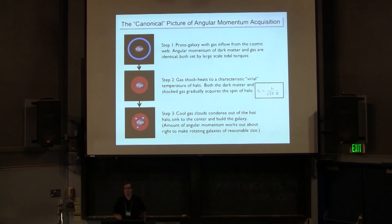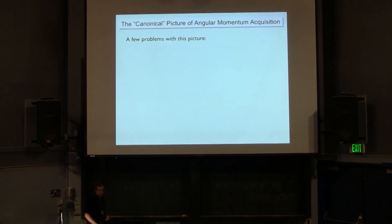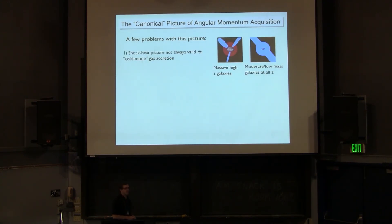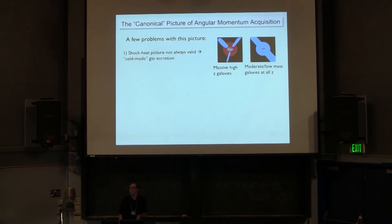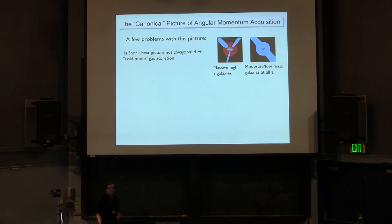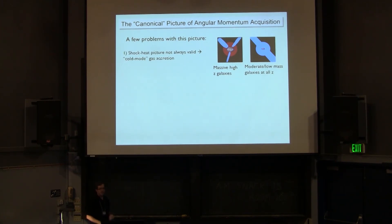This is the picture of angular momentum acquisition in galaxies, but there are a few caveats. Based on simulations, we now know the gas doesn't always shock heat to the virial temperature - that's not really how we think about galaxy growth anymore. At high redshift, even very massive galaxies can have cold streams that penetrate hot halos. At lower redshift and lower masses, cold mode gas can cool fast enough to not build up a shock, funneling straight into the galaxy without spending a large amount of time in the halo shock heating. So it's unclear how this new picture of galaxy growth might impact our idea of how galaxies gain angular momentum.